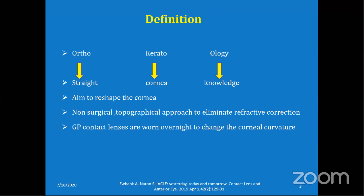Let's start with the definition of orthokeratology. It is made up of three words: ortho means straight, kerato means cornea, and ology is the knowledge. It is aimed to reshape the cornea. It is a non-surgical and topographical approach to correct refractive error. Basically, these are gas permeable contact lenses worn overnight to change the corneal curvature.